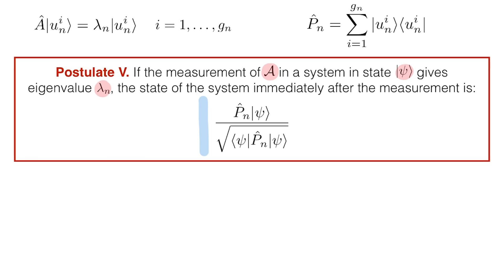Let's first check that this more general form is consistent with the case we discussed earlier of non-degenerate eigenvalues. If lambda n is non-degenerate, then the projection operator is simply the outer product of u n with itself. According to postulate 5, the state after the measurement is P n psi divided by the square root of the expectation value of P n with respect to psi.